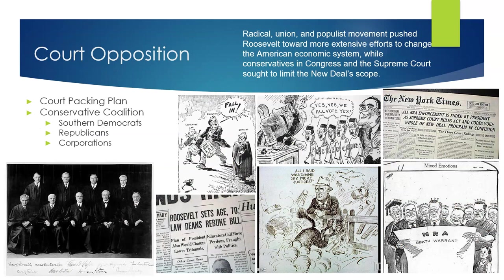Conservatives in Congress and on the U.S. Supreme Court also stood in opposition to the New Deal and sought to limit its scope. When FDR came to power, only three of the justices would have been considered liberal. One significant clash came in 1935 when the Supreme Court declared the National Industrial Recovery Act, or NIRA, unconstitutional in the case of Schechter Poultry Corporation v. United States. The court held that the NIRA exceeded Congress's power to delegate legislative authority. A year later, in 1936, the court ruled against the Agricultural Adjustment Act, or AAA, in United States v. Butler. The court argued that the law's taxation and spending provisions were unconstitutional.